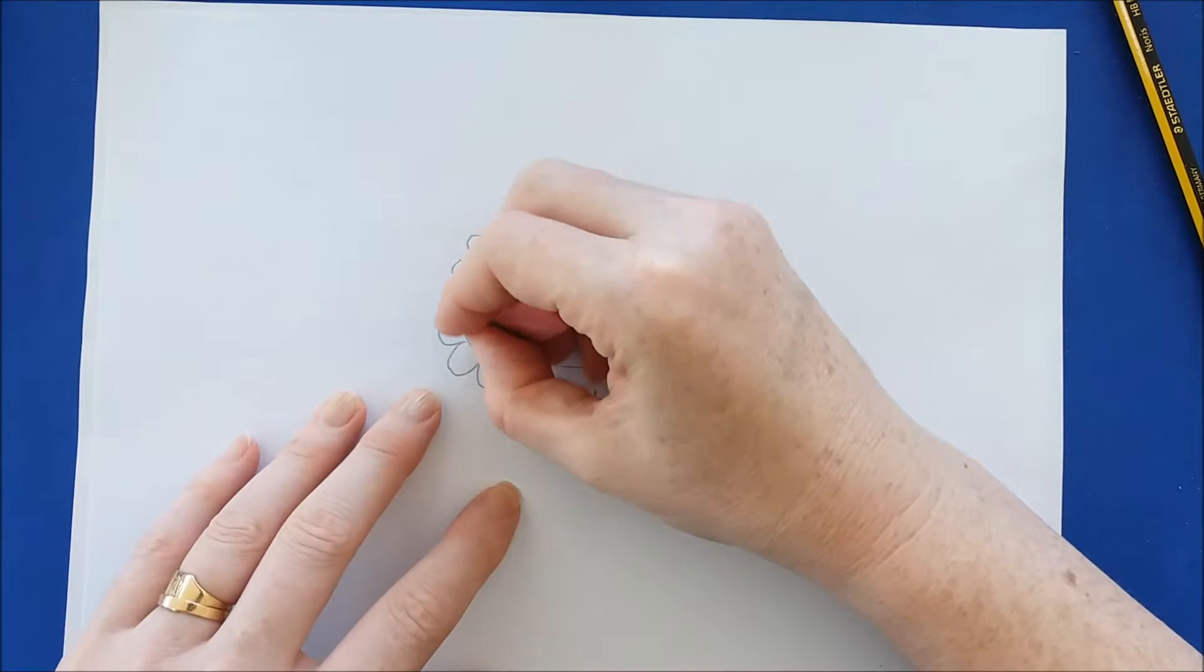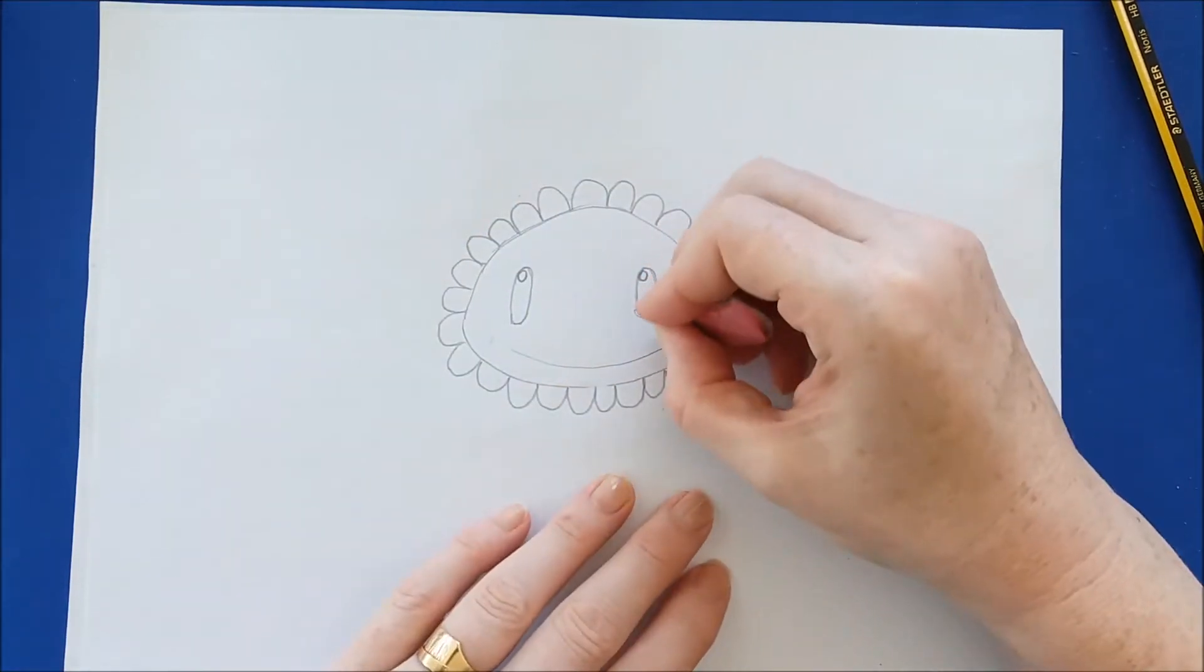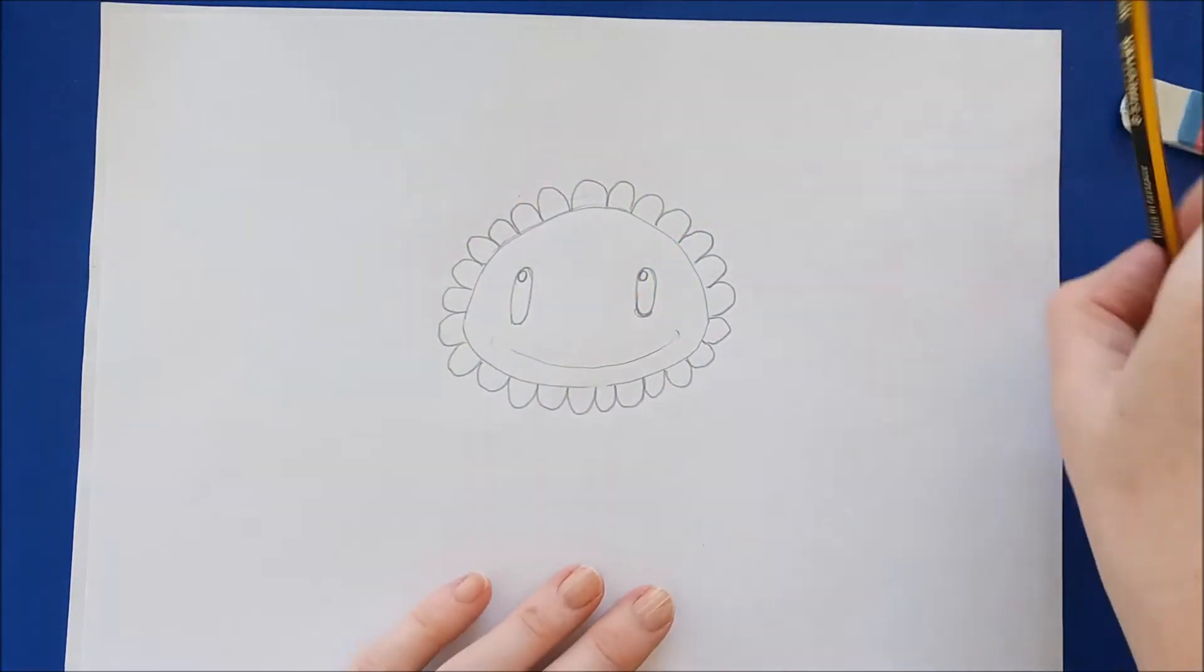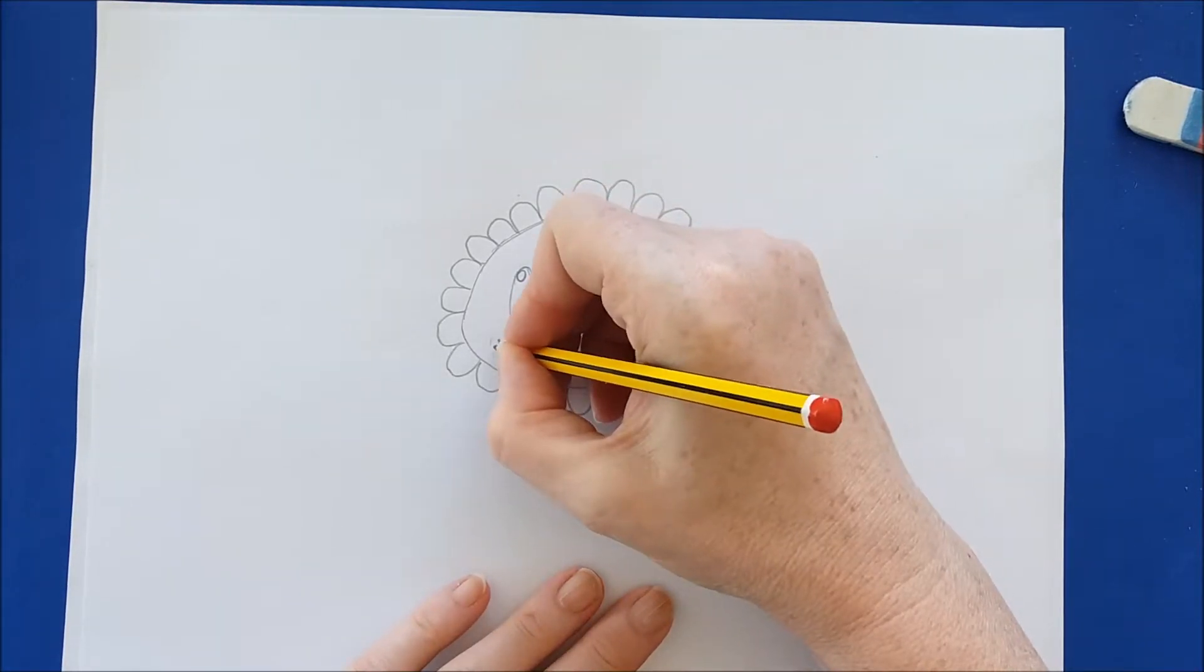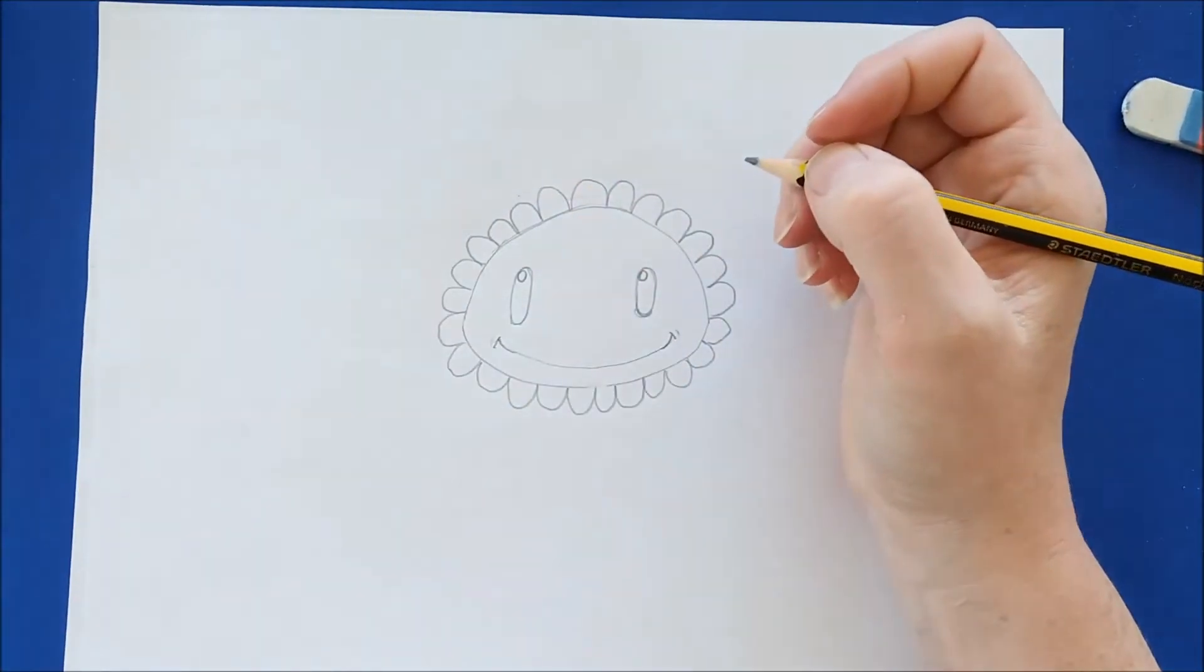Sunflower needs a stem and we're going to do that as soon as I give the smile just a little bit more of a curve so that it looks like a smile.